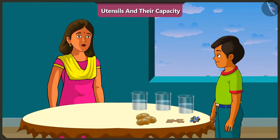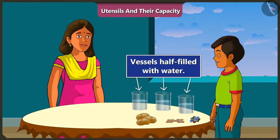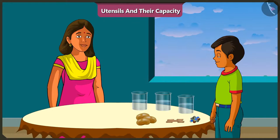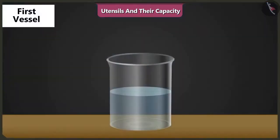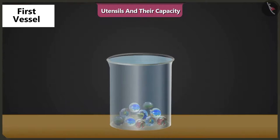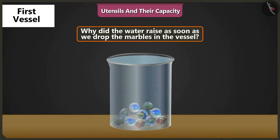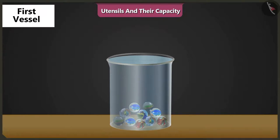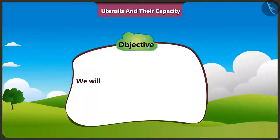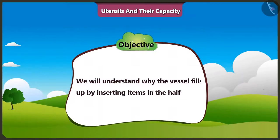Mishtu, what are you doing with water? All these vessels are half full. I am trying to fill them completely without adding more water. See, as soon as I dropped 10 marbles in a vessel half full with water, the vessel got completely filled with water. Mishtu, why did the water rise as soon as we dropped the marbles in the vessel? Hmm, that's what I cannot understand. Come on, I will explain. Today, we will understand how water level rises in a vessel when we drop objects in it.